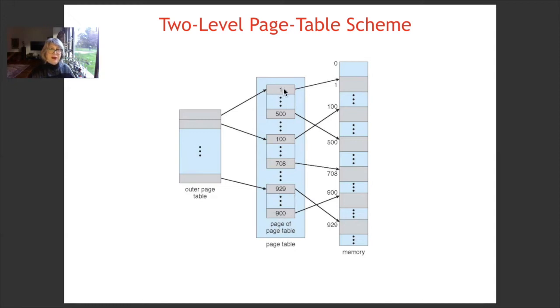And here we have mapping from the page numbers to the actual pages in the memory. Because page table itself is paged, then we have an outer page table which is showing at which page the related part of the page table is loaded.